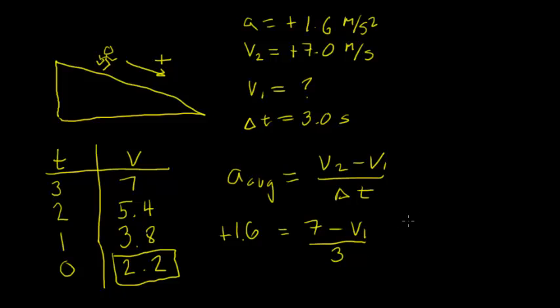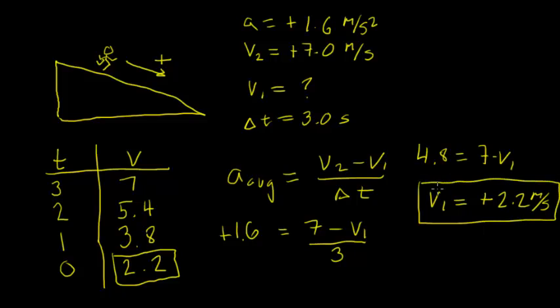Solving this, we multiply both sides by 3. You get 4.8 equals 7 minus V1. Doing a little algebra rearranging, we get to the same answer we had before, which is V1 equals positive 2.2 meters per second. And that is how we solve example 2.5.